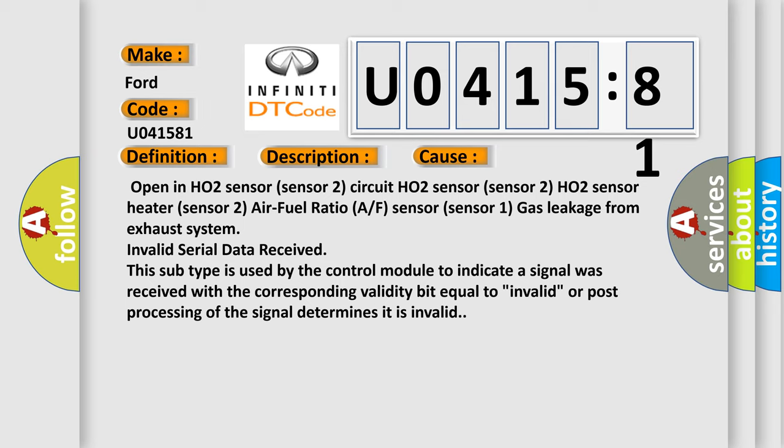Invalid serial data received. This subtype is used by the control module to indicate a signal was received with the corresponding validity bit equal to invalid or post processing of the signal determines it is invalid.